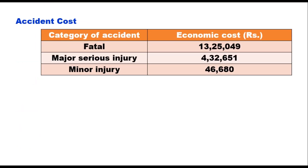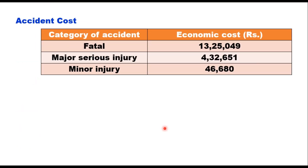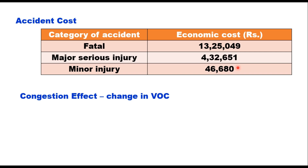The next component is accident cost. This is also part of the direct benefit as it is possible to predict the reduction in accidents on a section of the road after its improvement. IRC SP 30 provides costs of different categories of crashes — a fatal crash is estimated to have an economic cost of 13,25,049 and a minor injury 46,680. SP 30 also provides equations for estimating time-related and distance-related congestion effects of different categories of vehicles on different types of roads.